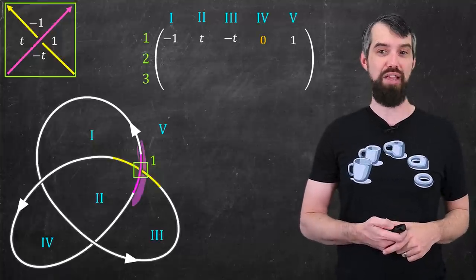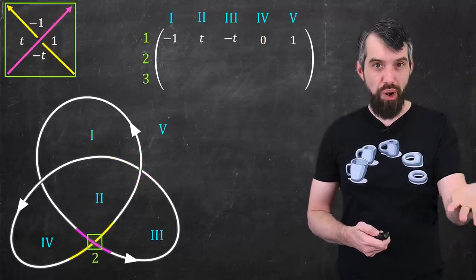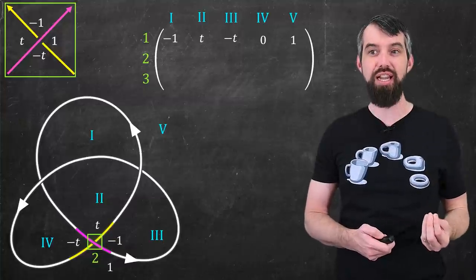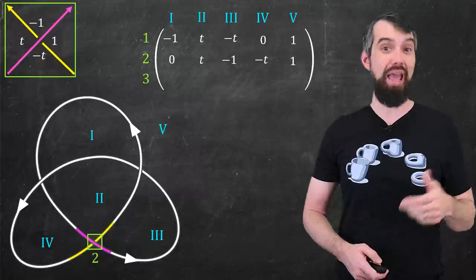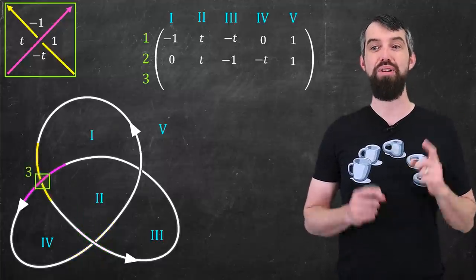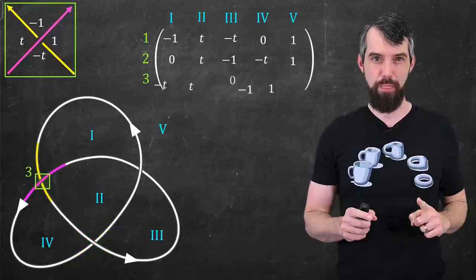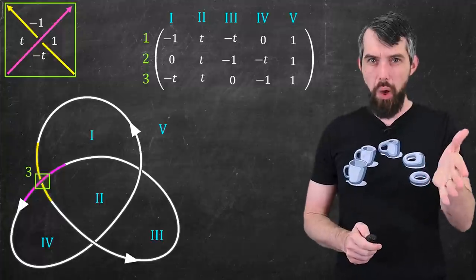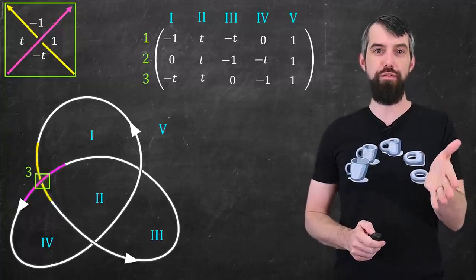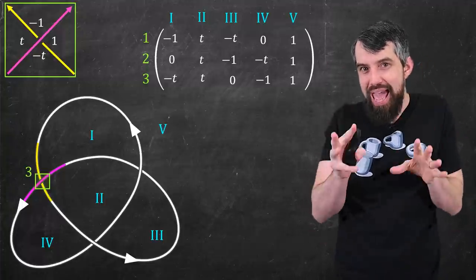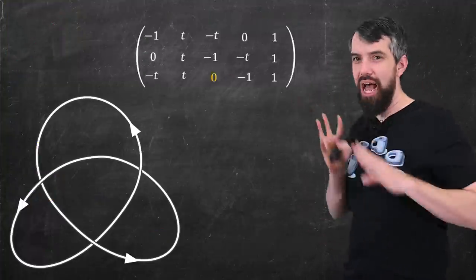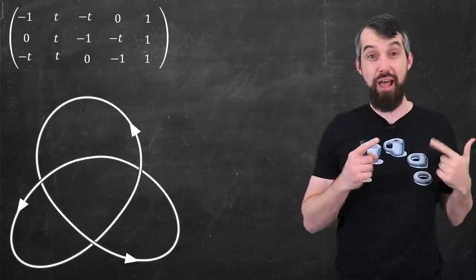Do the exact same thing for region number 2. I'll pull in all of the numbers according to my cheat sheet. I put them into a matrix, add the 0 in the remaining spot, and likewise for crossing number 3, I'm going to get a matrix like this. So the details don't really matter all that much. What I really want you to focus on is that I began with a knot and I ended up with a matrix.